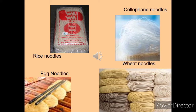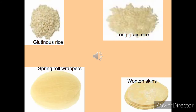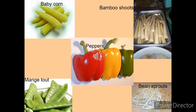Noodles, as mentioned, are an integral part of Chinese cuisine. Different varieties include wheat noodles and egg noodles. Rice is again an important part of Chinese food, with different types available. Spring roll wrappers and long grain rice are also commonly used. Baby corn, bamboo shoots, and peppers are also featured ingredients.